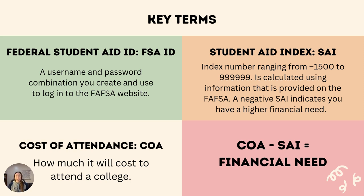In your research, you may see the acronym COA, which means cost of attendance. The COA covers every possible expense that may be necessary for a student to attend college. This could include tuition, fees, books, meal plans, housing, and transportation.